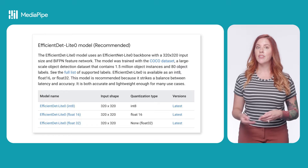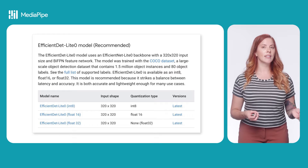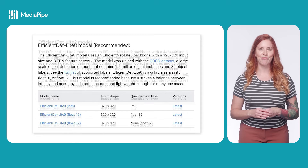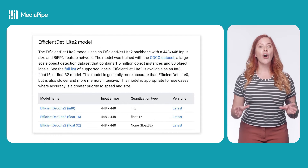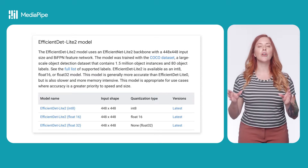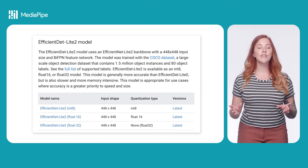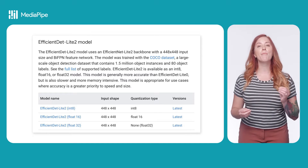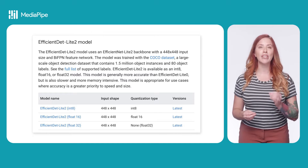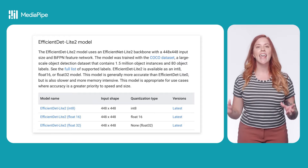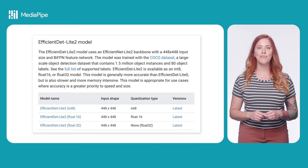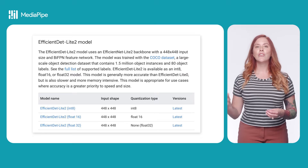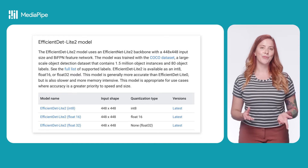There are three recommended models listed here with two available formats each: EfficientDetLite 0, EfficientDetLite 2, and SSD MobileNet V2. All three models were trained using the COCO dataset, a large-scale object detection dataset that contains over 1.5 million object instances and 80 object labels. A list of the COCO classes is linked so you can see what labels are available.